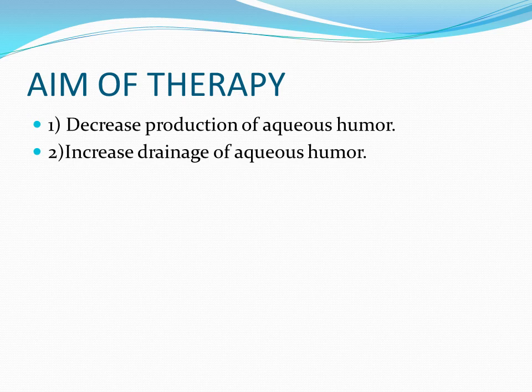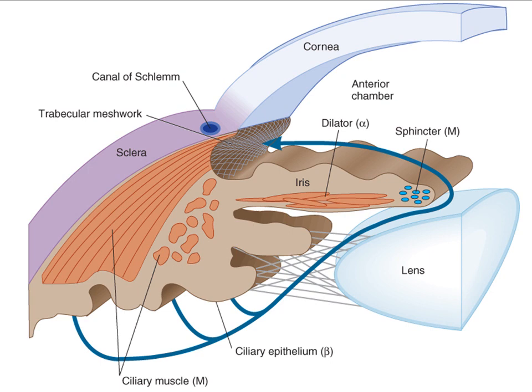This condition arises either by increased production of aqueous humor or by decreased drainage of aqueous humor. So our aim of therapy should be either to decrease the production of aqueous humor or to increase its drainage. The site of formation and pathway of drainage of aqueous humor is illustrated in this figure. Around 90% of aqueous humor drains through the trabecular route, while only 10% passes into the connective tissue spaces within the ciliary muscles, then into suprachoroidal vessels and episcleral vessels — this route is known as uveoscleral outflow.